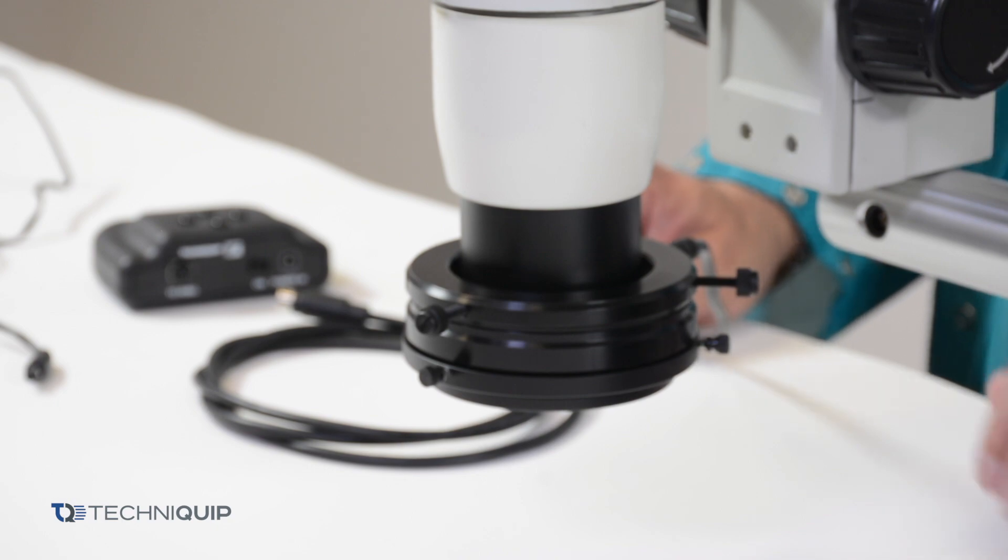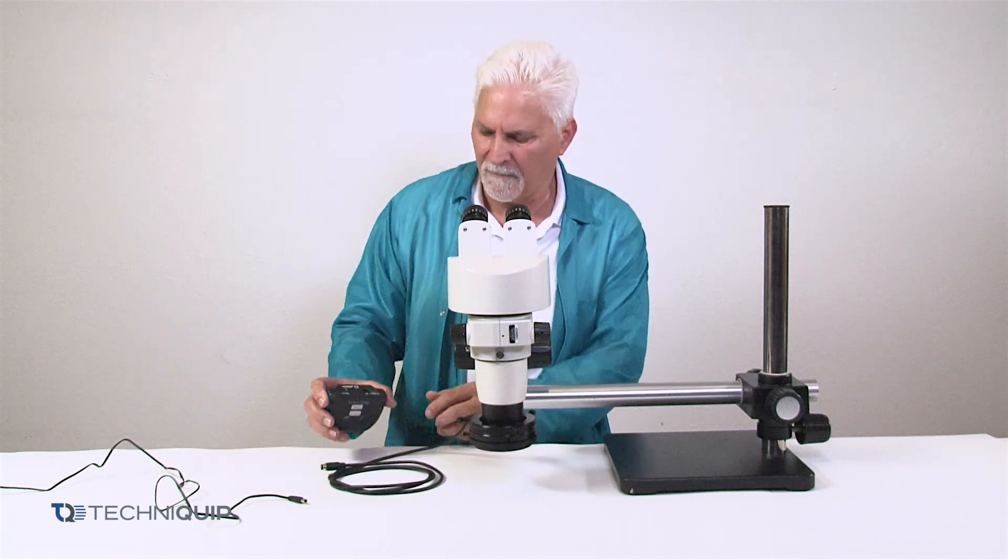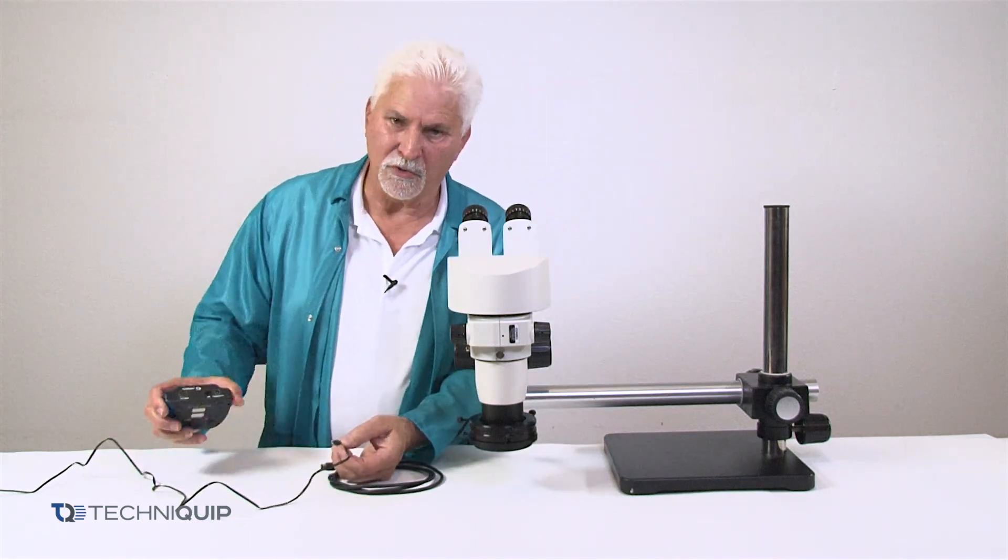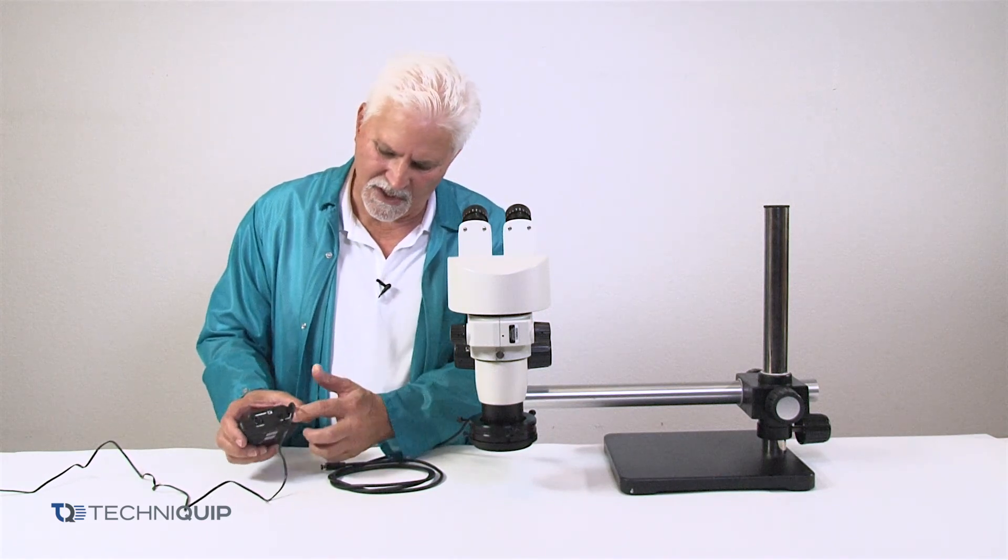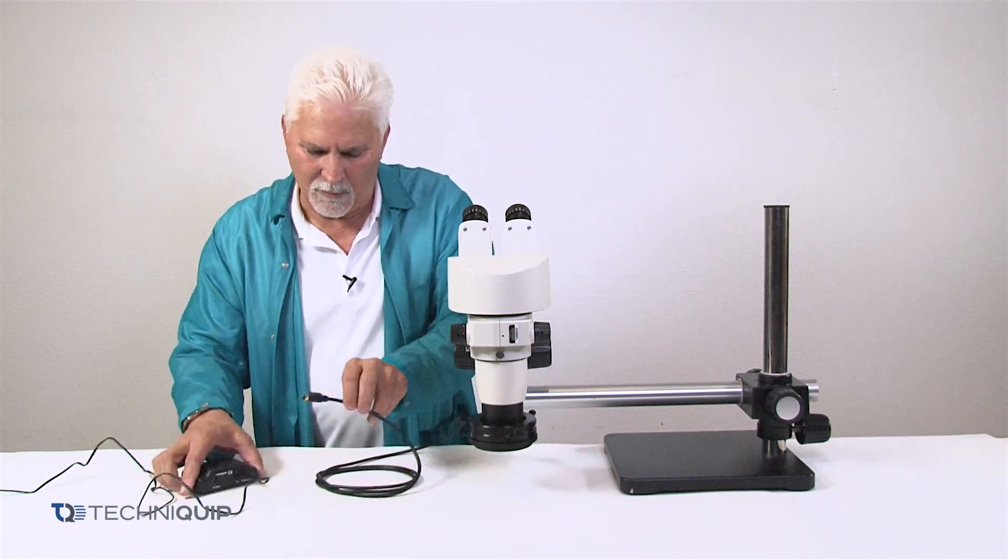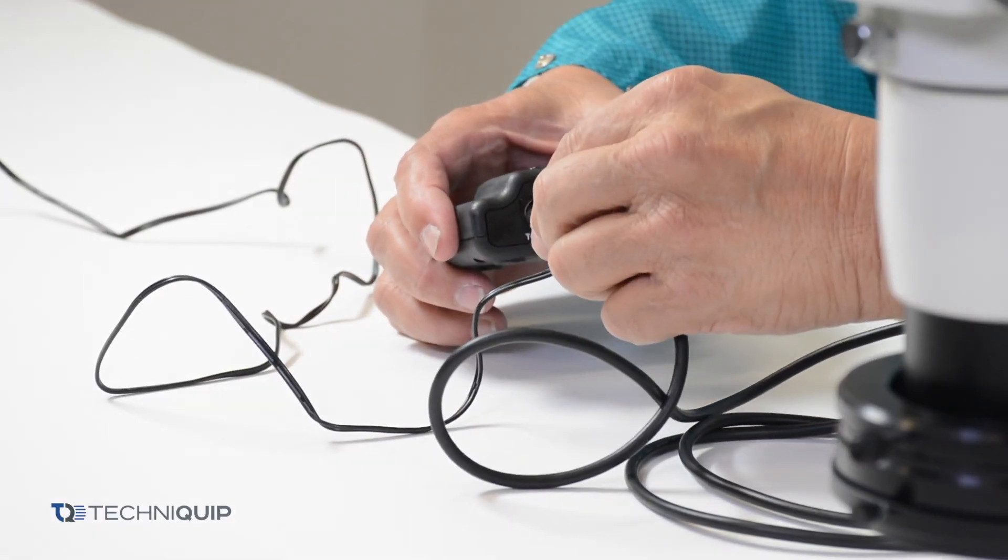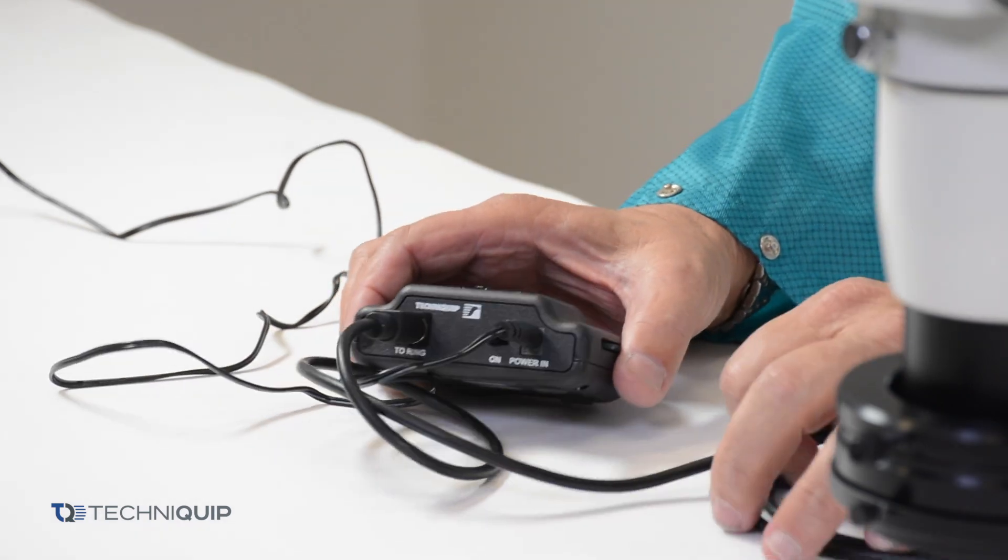The final step in installing the ring light is to connect the power system, the cabling and the power supply. The power supply goes into a standard wall socket. Input is on the back and then you've got the interface cable which plugs into the back also. There's only one way for it to go.